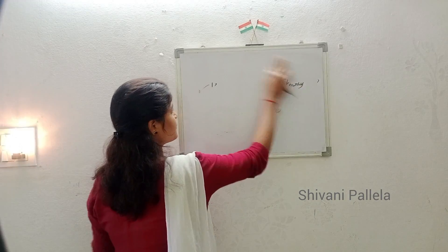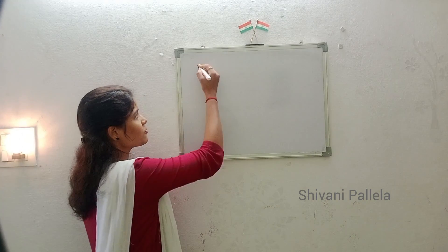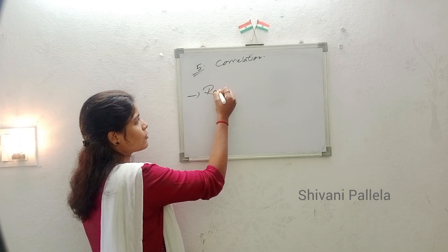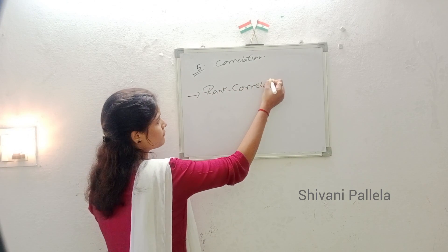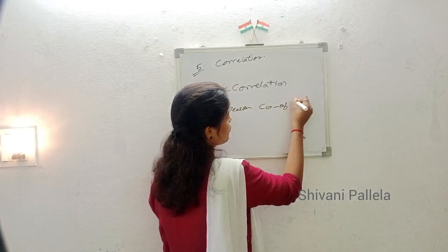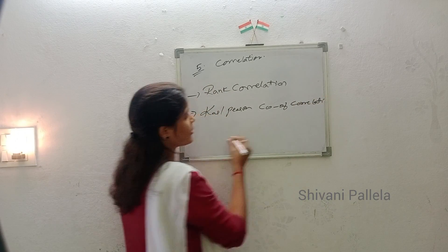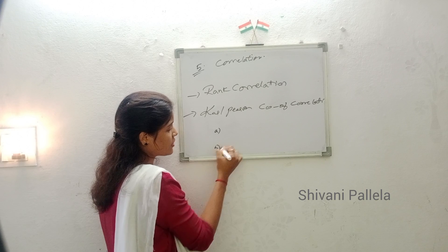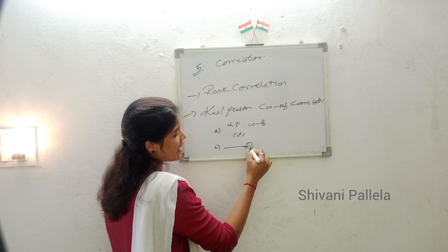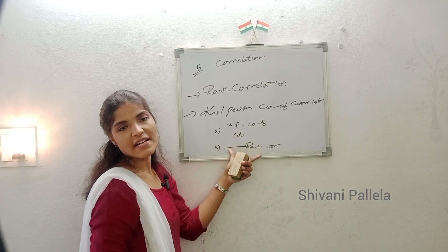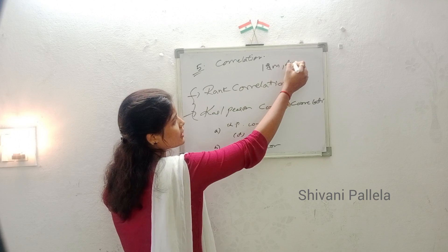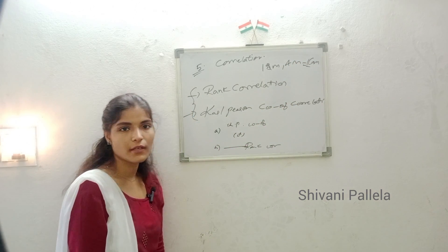Now we will discuss the fifth unit — Correlation. In correlation, there are only two methods: rank correlation and Karl Pearson's coefficient of correlation. From the fifth unit, the 'a' question will come from Karl Pearson's coefficient of correlation and the 'b' question will come from rank correlation. If you prepare these two methods, you will attempt one long and one short question, getting 16 marks from this unit.